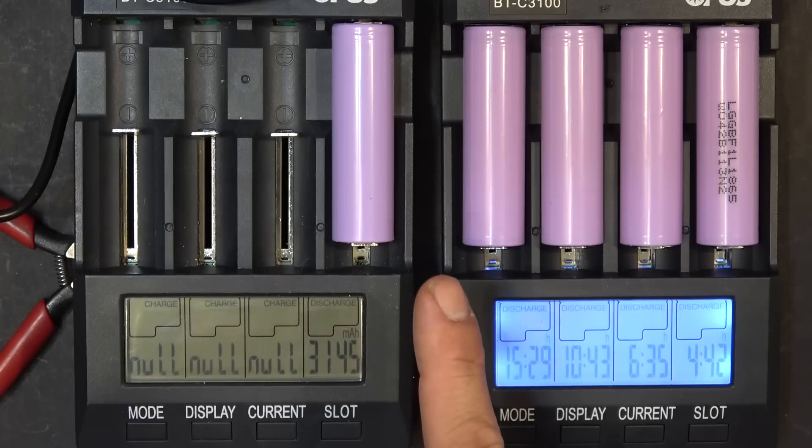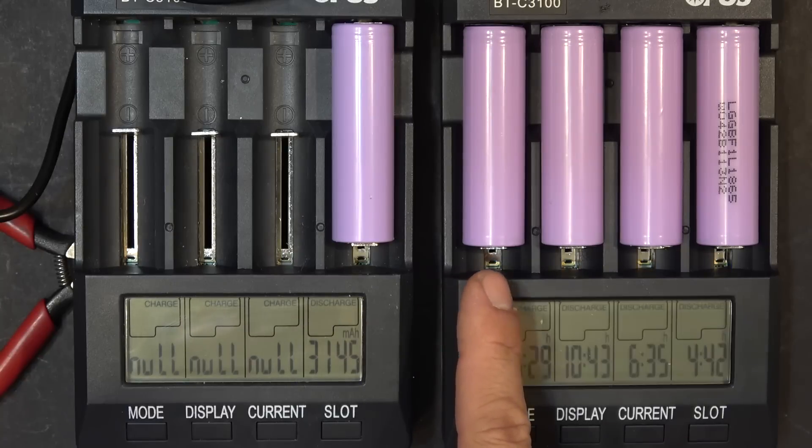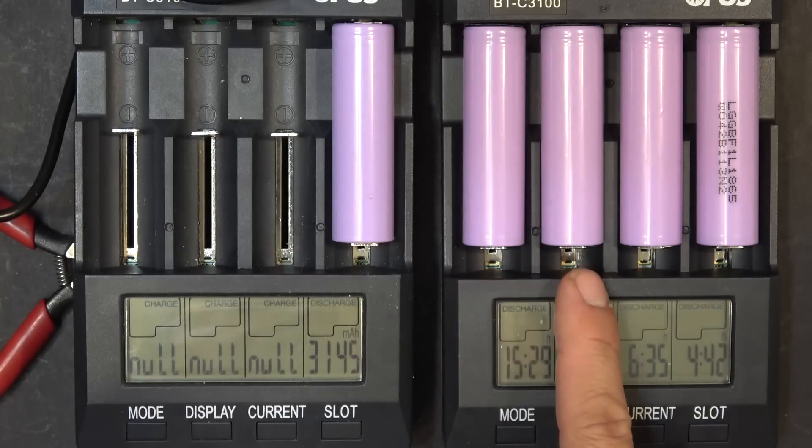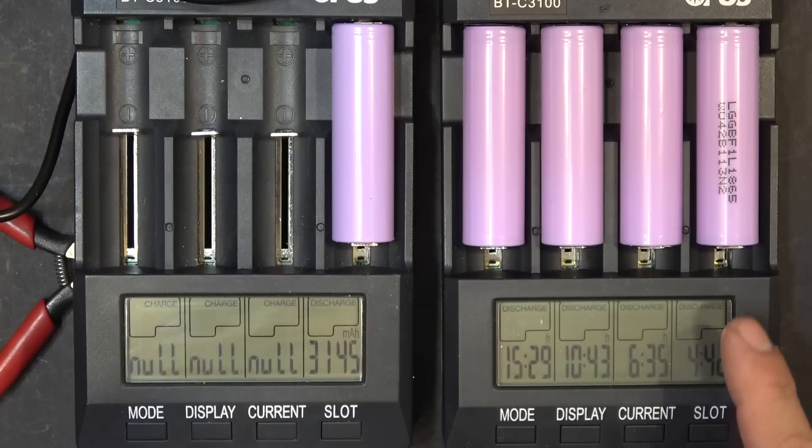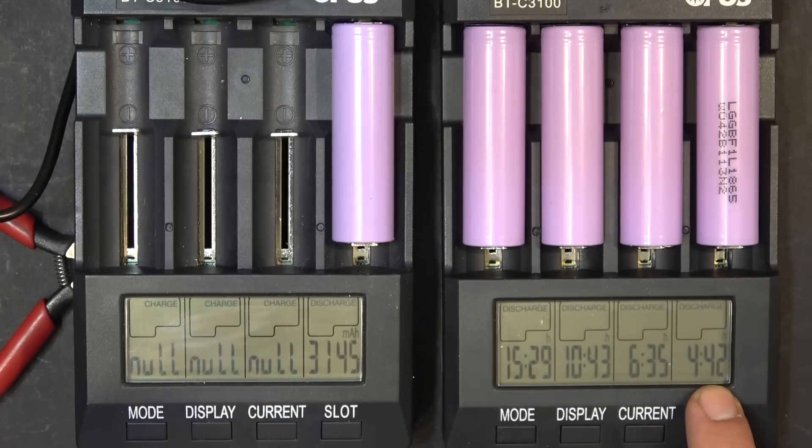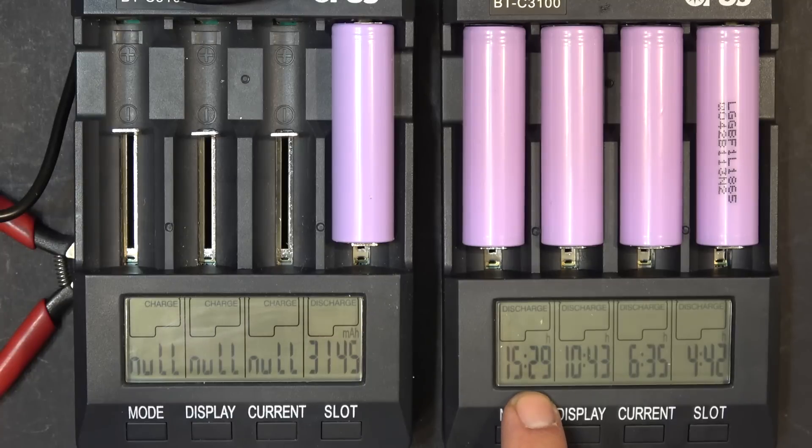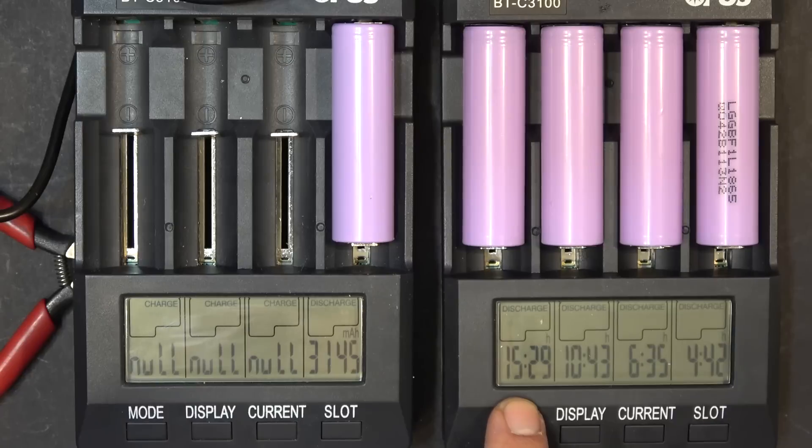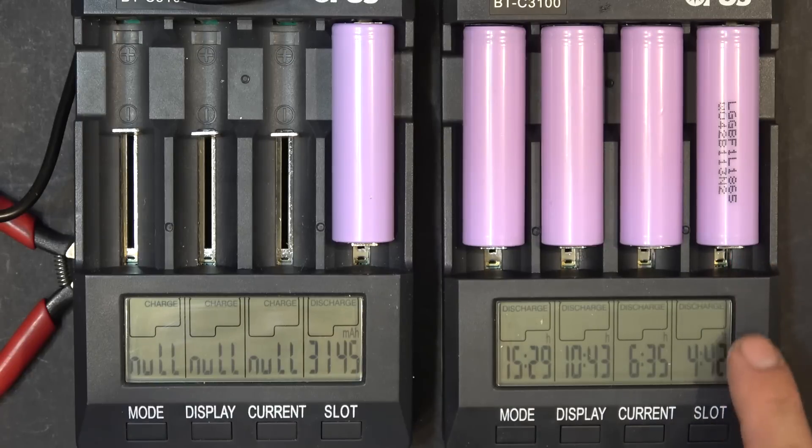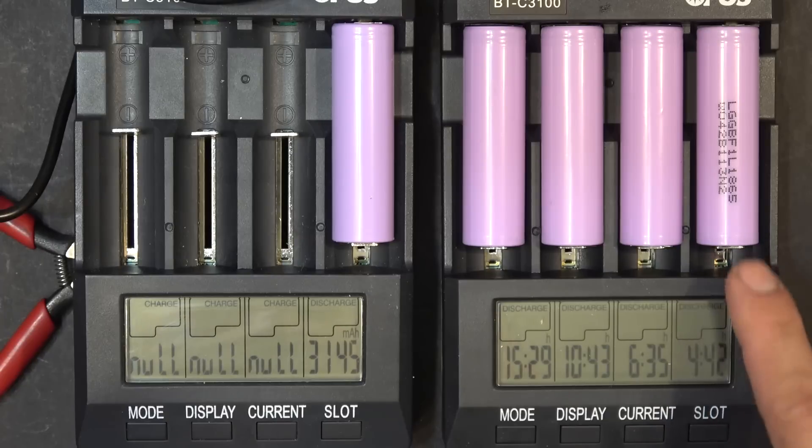But this one here discharged at 200 milliamp, 300 milliamp, 500 milliamp, and 700 milliamp. That's why you see this here takes the least time to finish, and this here takes the longest time to finish, because it's discharged at only 200 milliamp, whereas this one here discharged at 700 milliamp so it finished faster.